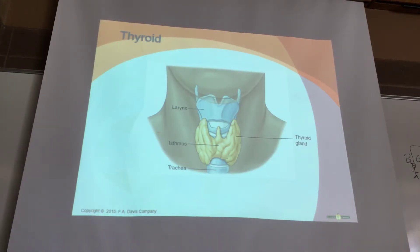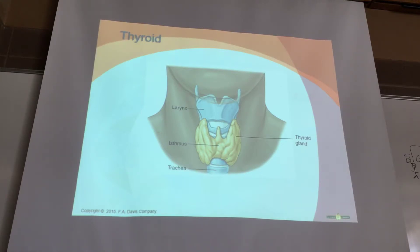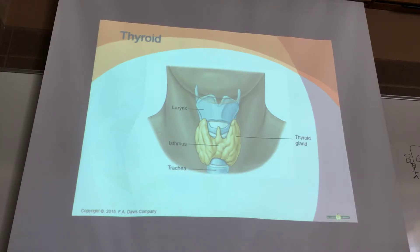The thyroid is the largest endocrine gland in terms of size. It consists of two large lobes connected by a narrow band of tissue called the isthmus. Located in the neck, it wraps around the front and sides of the trachea—kind of looking like the Batman signal, with an isthmus in the middle and wings going around the sides.